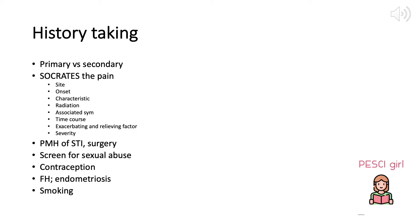In primary cases, the menarche has just started or it can happen even two years later, and we don't expect any pathology. The cause is usually too much prostaglandin production, and NSAIDs can work perfectly for this kind. In secondary cases, the patient usually has a period of pain-free menses. The most prevalent diagnoses could be adenomyosis, endometriosis, ovarian cysts, fibroids, or even IUD contraception.